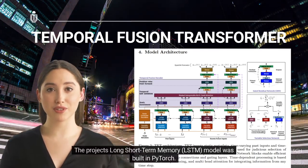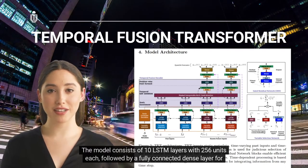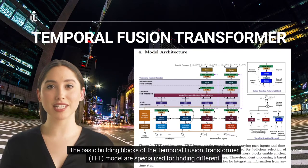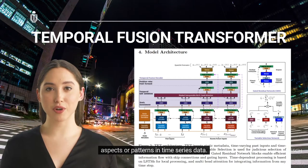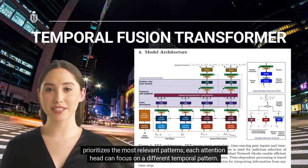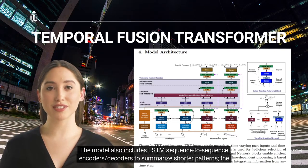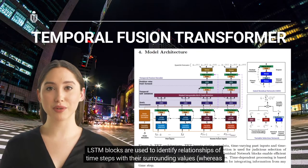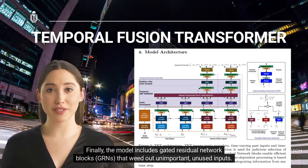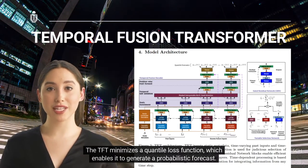The TFT concept was introduced in a late 2020 arXiv article on temporal fusion transformers for interpretable multi-horizon time series forecasting. The basic building blocks of the TFT model are specialized for finding different aspects of time series data. These include a temporal multi-head attention block that identifies long-range patterns and prioritizes the most relevant ones, LSTM sequence-to-sequence encoders/decoders to summarize shorter patterns, and gated residual network (GRN) blocks that weed out unimportant inputs. The TFT minimizes a quantile loss function, which enables it to generate a probabilistic forecast.